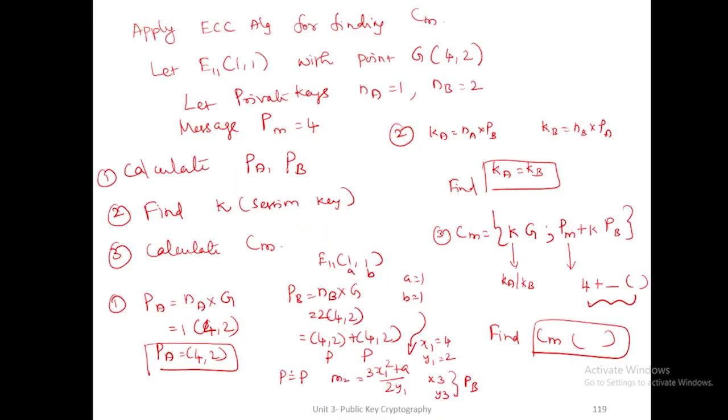So I am taking the first one, na into g. Here na is 1, g is the point value (4,2). So 1 of (4,2) means if you multiply 1 of (4,2), it is (4,2). So pa value is (4,2).